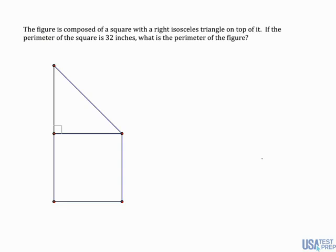The figure below is composed of a square with a right isosceles triangle on top of it. If the perimeter of the square is 32 inches, what is the perimeter of the figure?